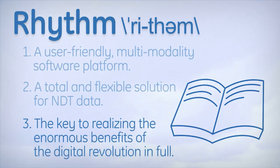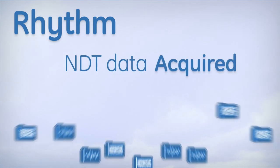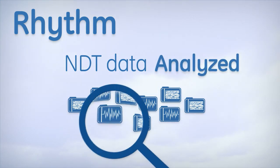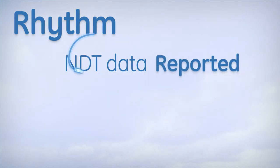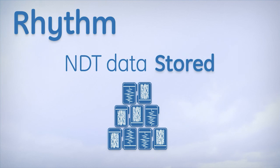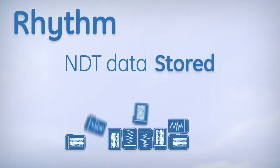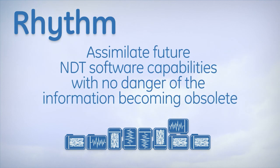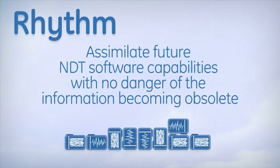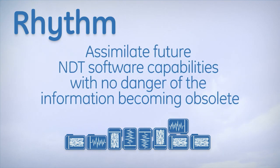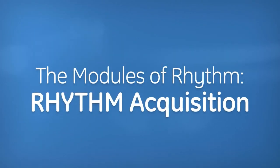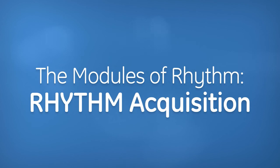Simply put, Rhythm uses industry-standard data communication protocol to ensure that inspection data can now be acquired, analyzed, reported, and stored on a stable platform of scalable architecture. It allows you to assimilate future NDT software capabilities with no danger of the information becoming obsolete. Rhythm is modular and allows you to build solutions to fit your specific needs.